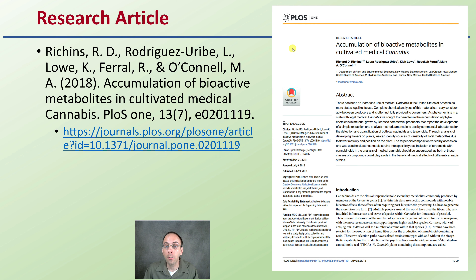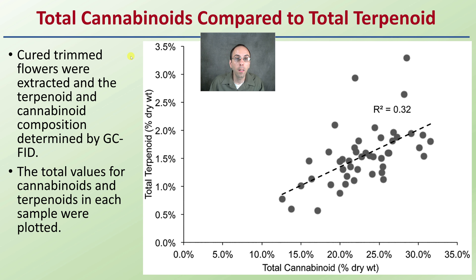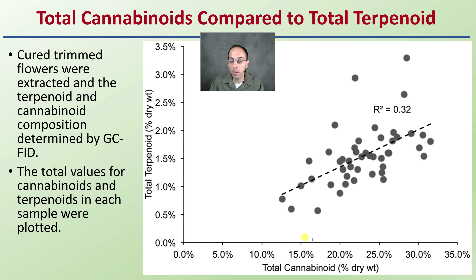Now another research article here is looking at the accumulation of bioactive metabolites, and we see the link provided. The data shows a nice graph looking at total cannabinoids compared to total terpenes. Cured, trimmed flowers were extracted for terpene and cannabinoid composition determined by a GC-FID method of analysis, and the total values for cannabinoids and terpenes in each sample were plotted. We do see some variability, but the higher amount of total cannabinoids produced tended to lead to a greater amount of terpenes produced as well.